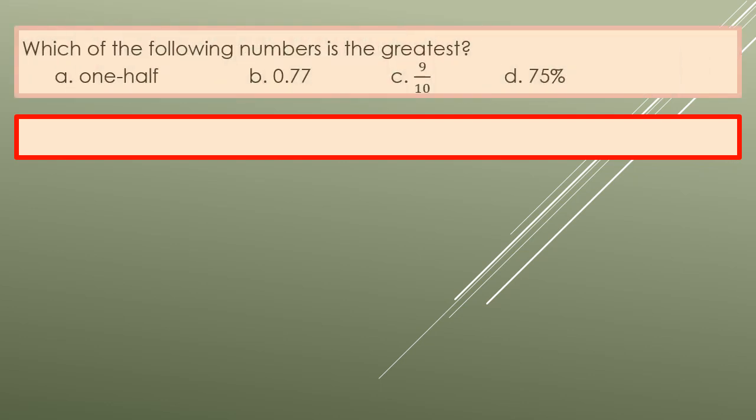Today let us review some concepts. For our first review, which of the following numbers is the greatest? You are given one half, 0.77, nine tenths, and seventy-five percent. In order to understand it better, I will write it in decimal. One half is equal to 0.5, b is 0.77 as is, c is nine over ten equals 0.9, and d is 75 percent equals 0.75. In this case, you can easily identify which is the greatest, so we have c.